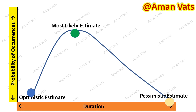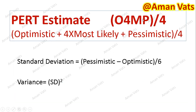Let's say for one activity you have 10 days optimistic, 15 days most likely, and 20 days pessimistic. The PERT formula is: (Optimistic + 4 × Most Likely + Pessimistic) / 6. So that's 10 + (4 × 15) + 20 = 10 + 60 + 20 = 90, divided by 6 = 15 days. So the PERT estimate for this activity would be 15 days.